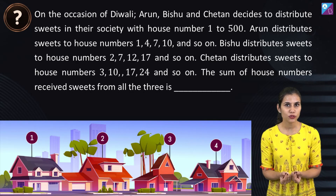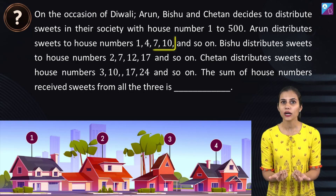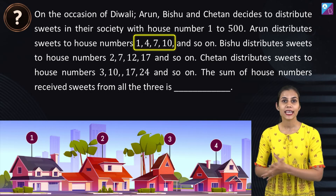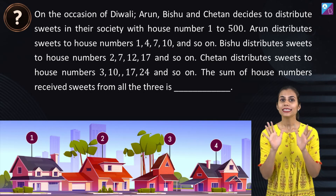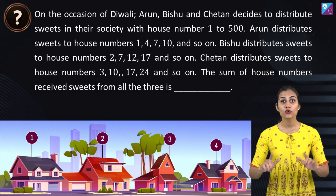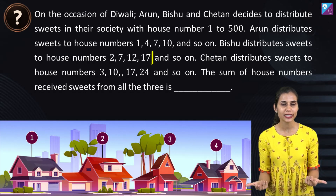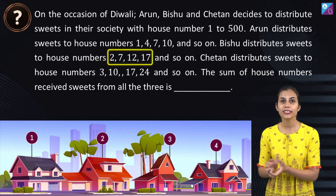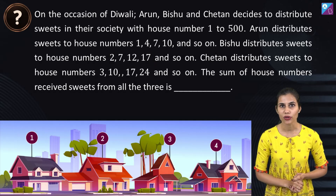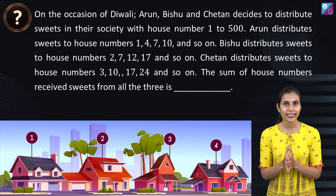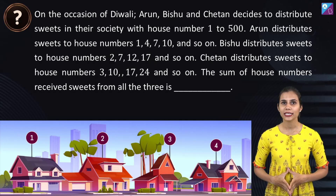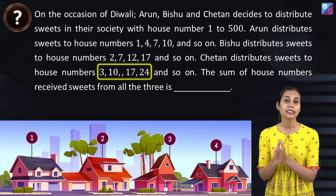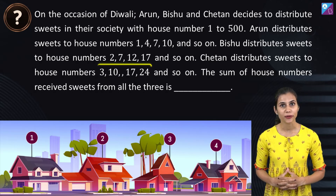Arun gets to distribute sweets in house numbers 1, 4, 7, 10 and so on. Similarly, the house numbers for Bishu are 2, 7, 12, 17 and so on. Similarly, Chetan gets to distribute sweets in house numbers 3, 10, 17, 24 and so on.